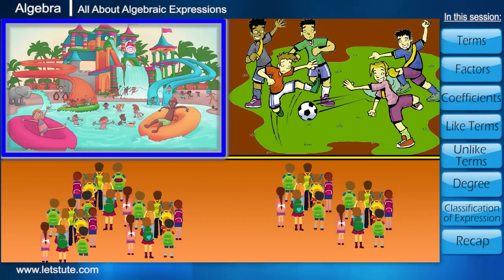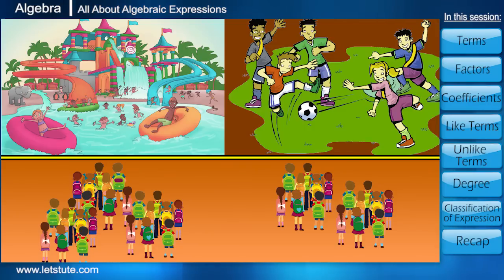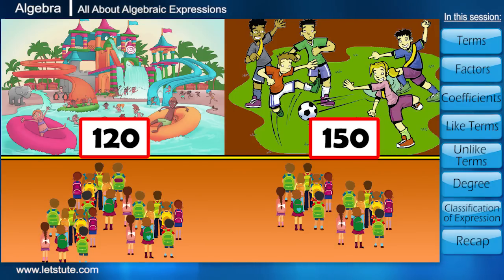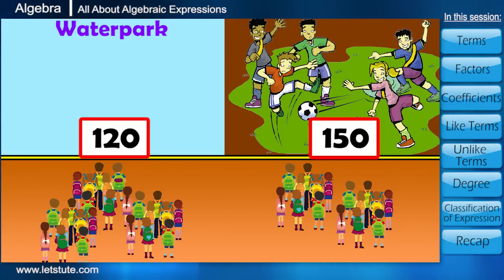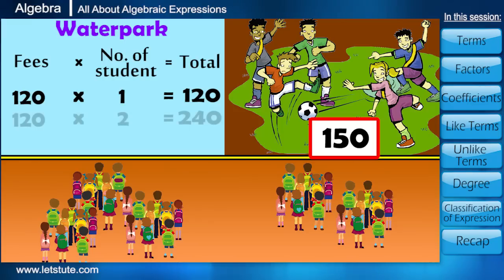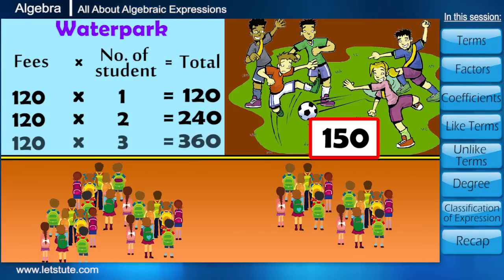Students going to visit water park need to pay 120 as fee. Whereas, students going for football match will have to pay 150 bucks as fee. Now, teacher wanted to know the total amount collected for water park. For one student, fees is 120 bucks. For two students, amount will be 120 into 2, that is 240 bucks. For three, it will be 120 into 3, that is 360.